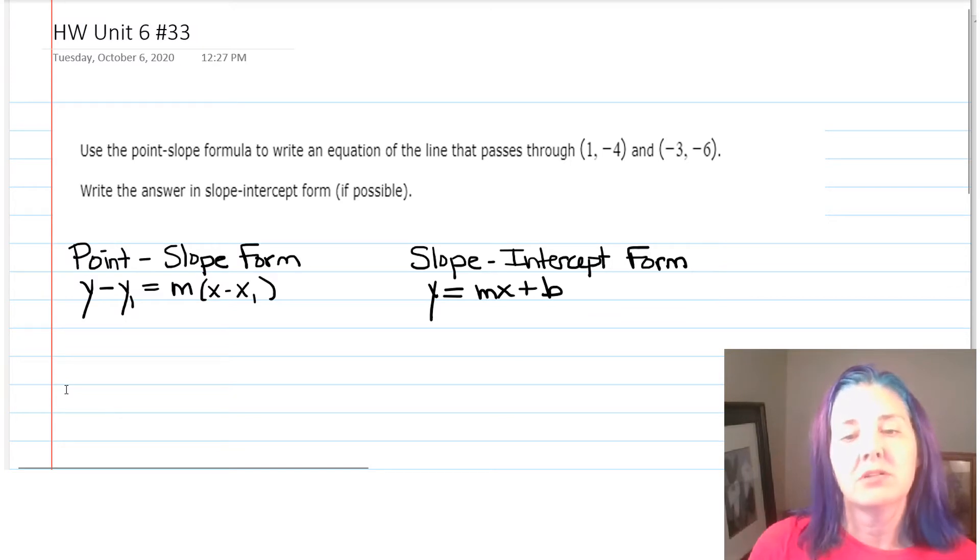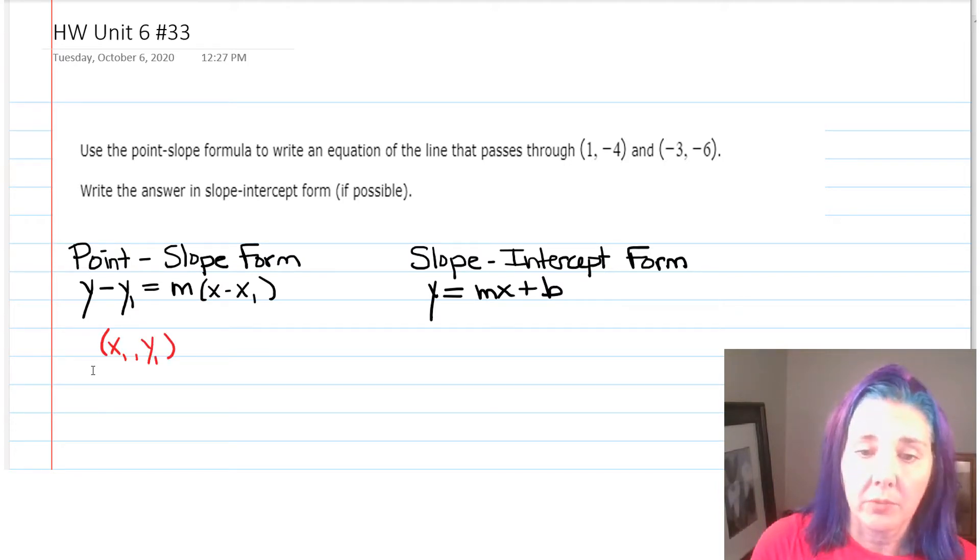One thing they don't mention, though, is how we get the m, because in order to use the point-slope form, you need to have a pair of coordinates, x₁, y₁, and you need to have the slope m. They gave us two pairs of coordinates, and by the way, we can use either one. For example, I could decide that I'm going to use (1, -4). So, x₁ would be 1, and y₁ would be -4. But they didn't tell us the slope.